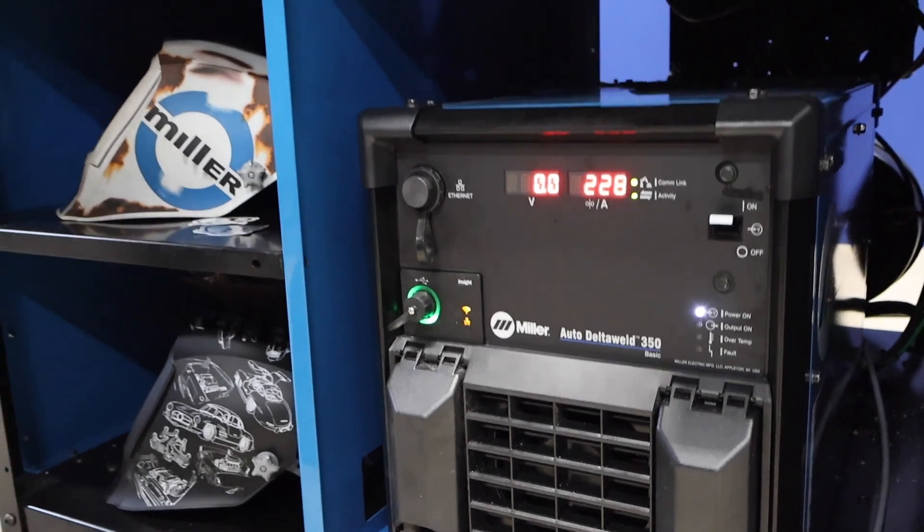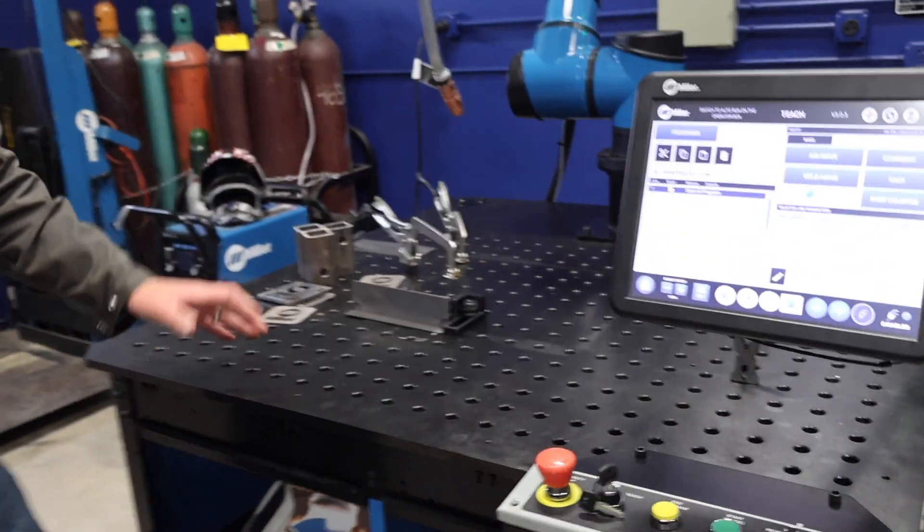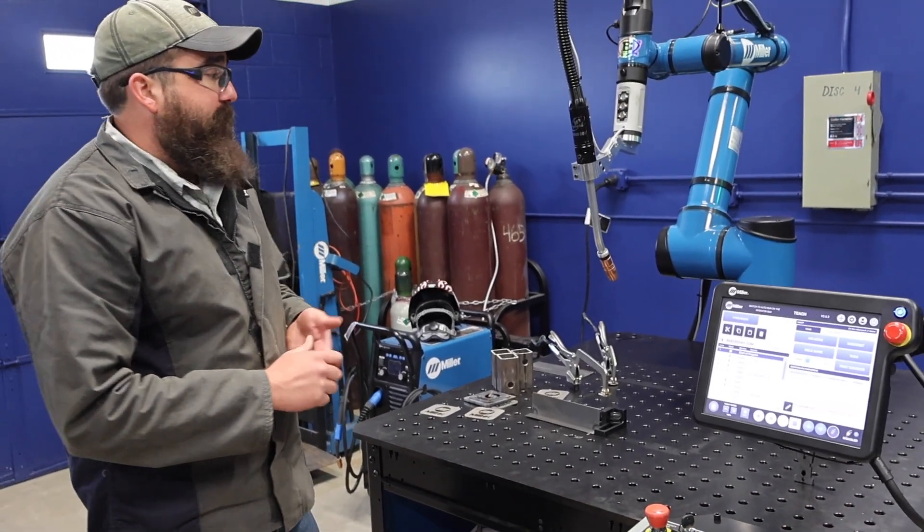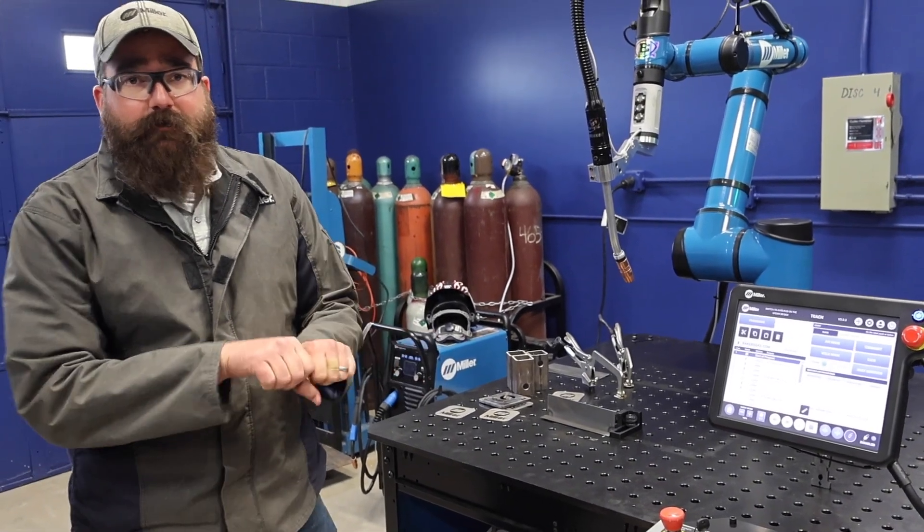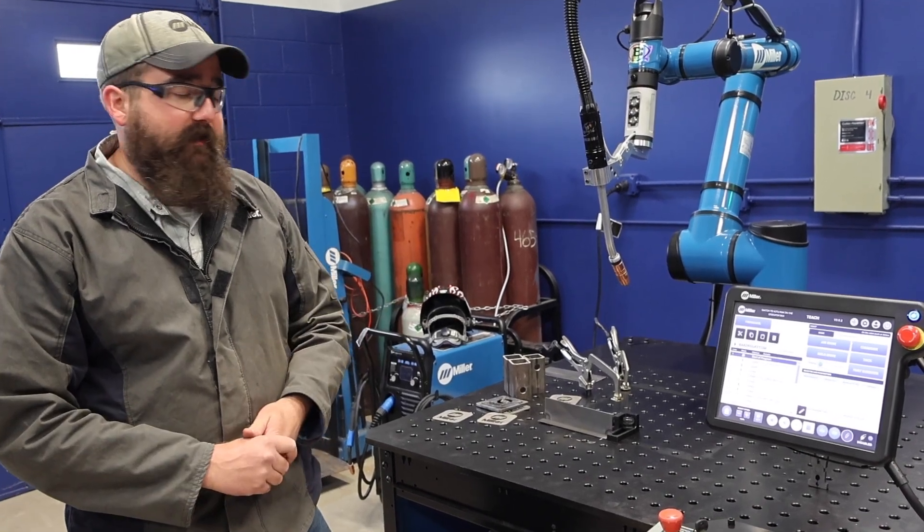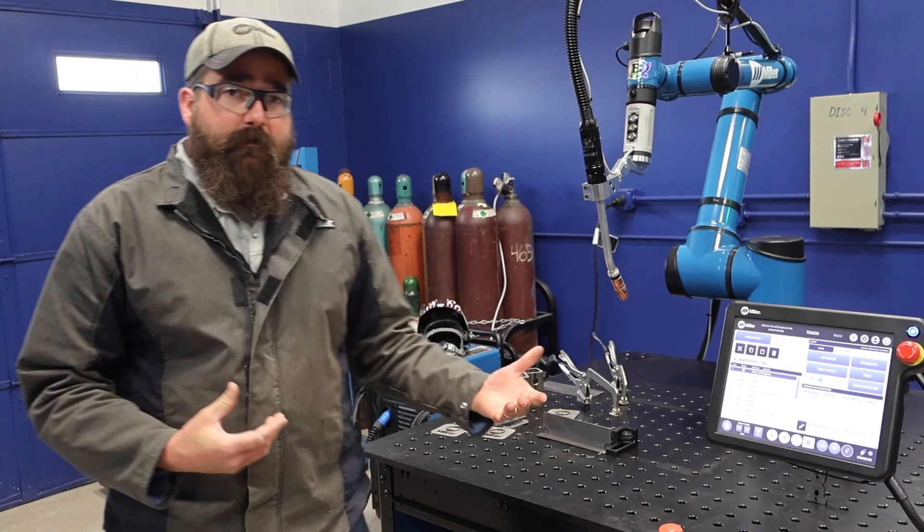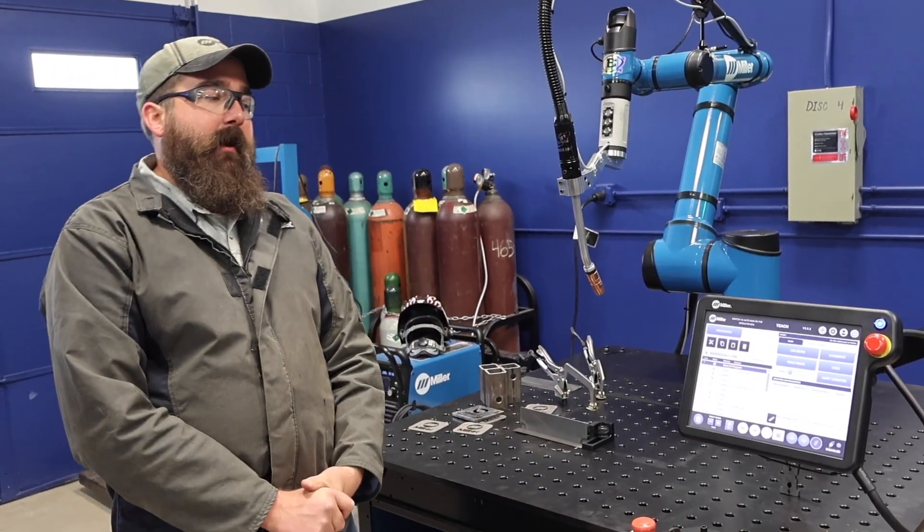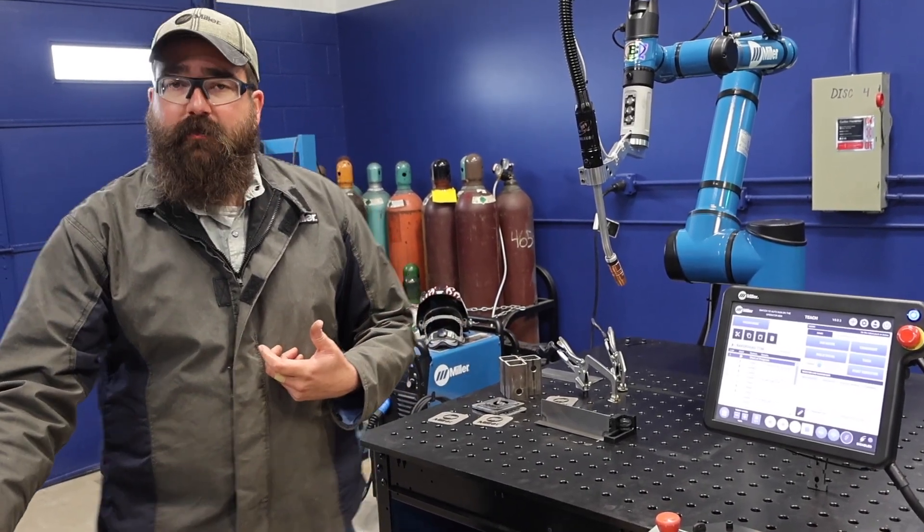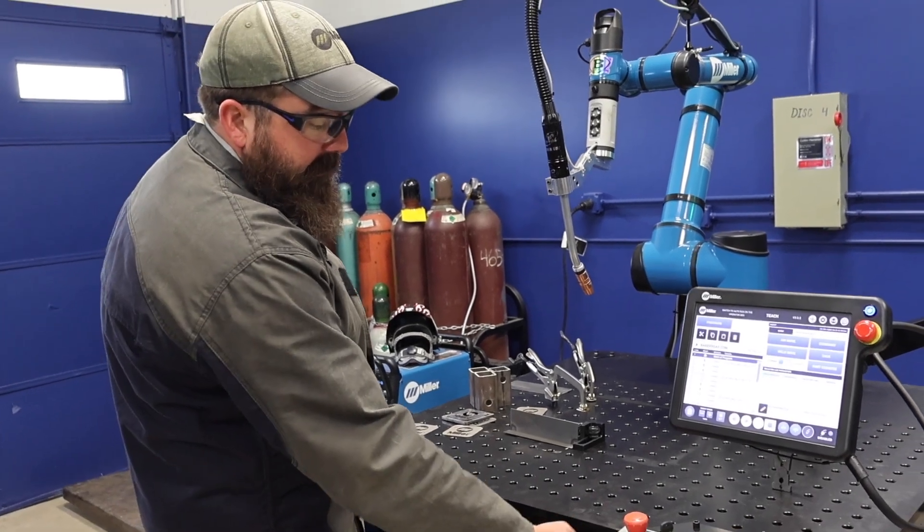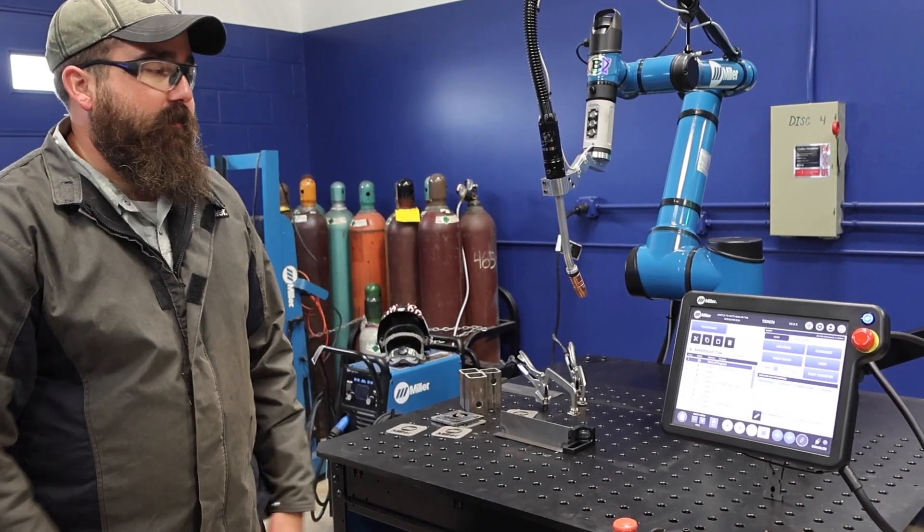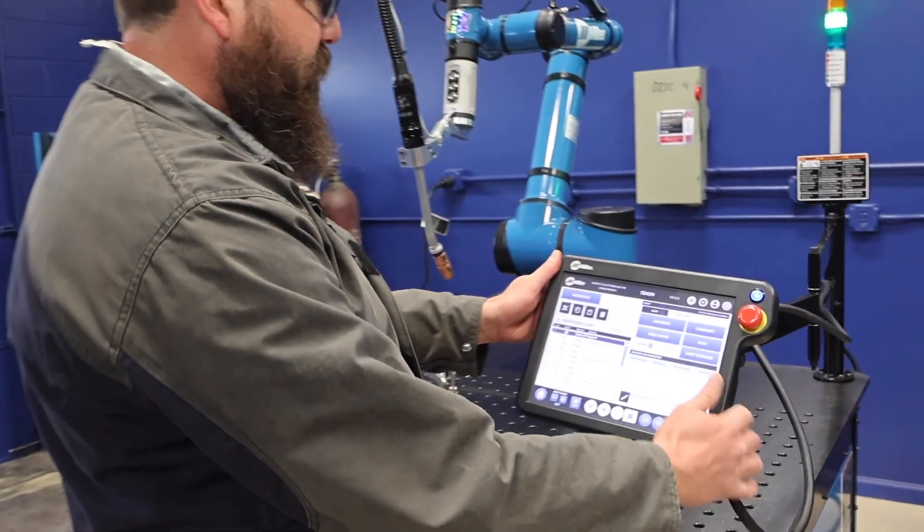The setup on this unit is about half a day setup. It comes crated, drop ships right to your location. You uncrate it, it's a couple of plugs and wires you plug in. We put a plug on it and put it on the wall. This unit also comes with one day training from Miller. Our local Miller Raptor robotic guy will come out and help with training. There's also a QR code here that links you to information on how to set up this unit.